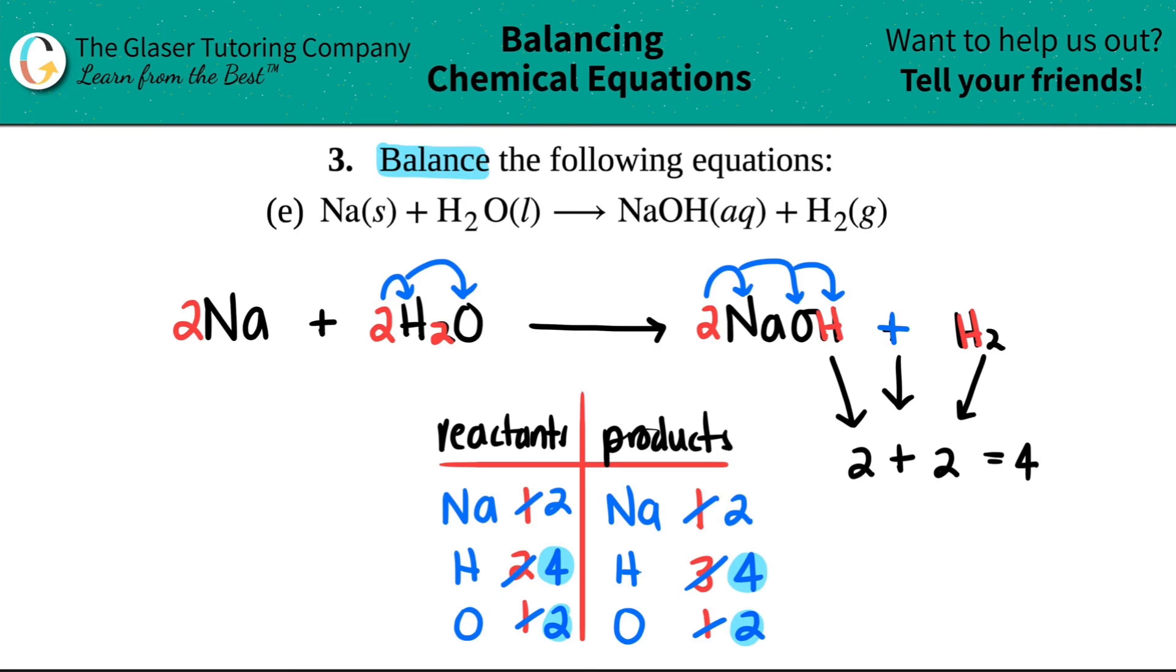And now all of the numbers are nice and balanced. So we should have had a two, a two, a two, and a one. There's no coefficient here so just make sure that that's a one and not a zero. There's secretly a one here, one H2, but that's it. Now it's balanced, we did it.